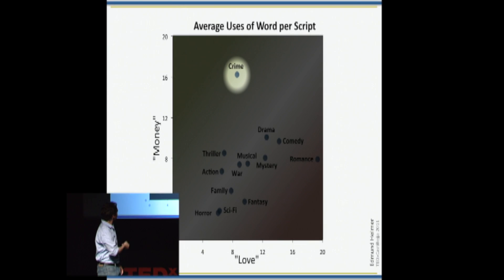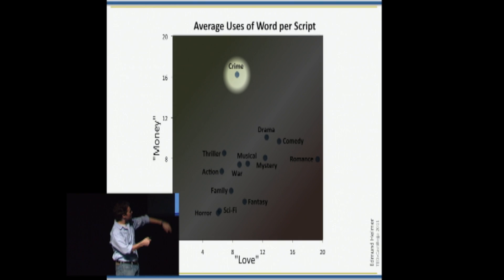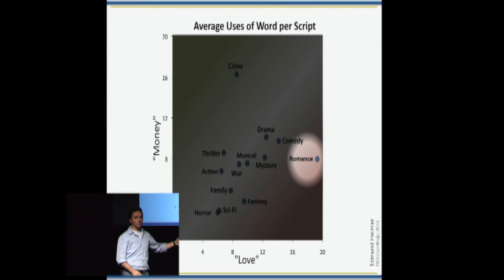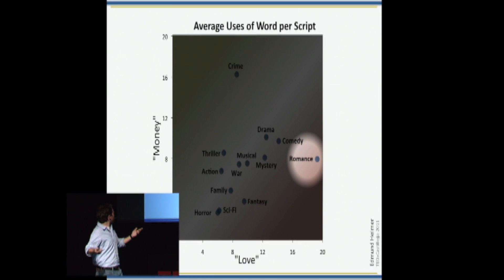Alright, so let's start at the top. Crime, it's way up high, right? A lot about money, not too much about love. That makes sense. How about on the right? We've got romance. A lot about love, not so much about money. That's what a romance is supposed to be about, right?